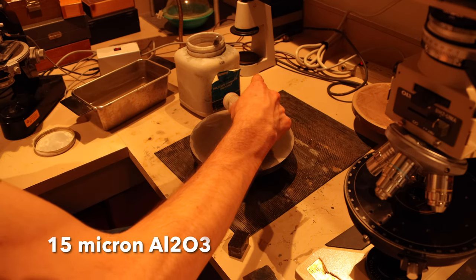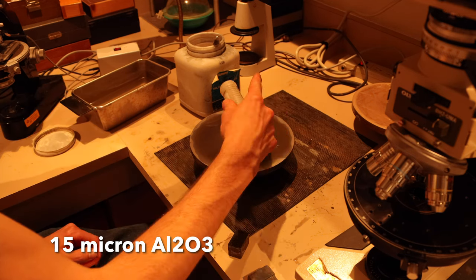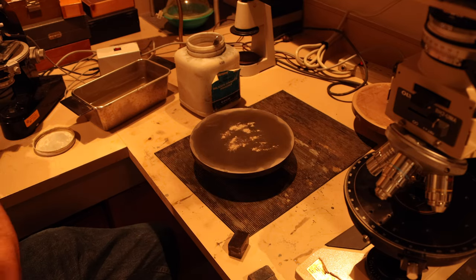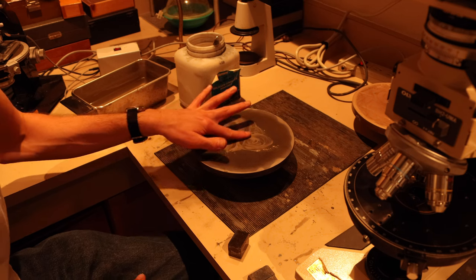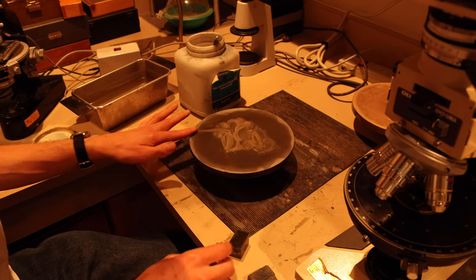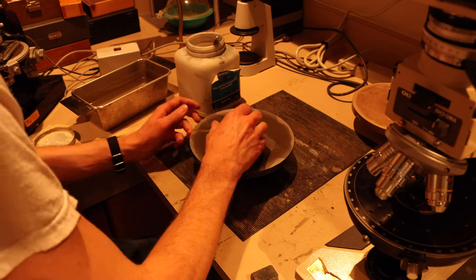Moving back to the flat plate, I'm going to use some 15 micron aluminum oxide. This will give it a nice matte finish and it'll be a good intermediate step before the lapping film.